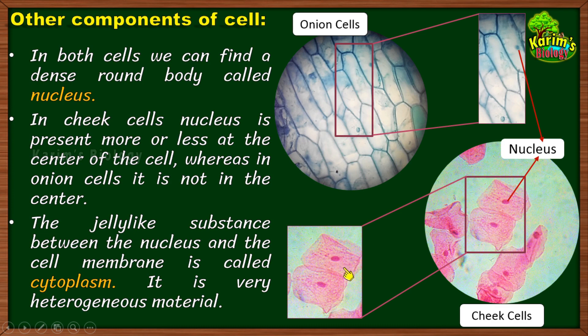Cytoplasm is called a heterogeneous material because within it there are so many substances dissolved — proteins, cell organelles called cell organelles, macromolecules, and carbohydrates. The cytoplasm is not pure; it has different substances in it, that's why it is called a heterogeneous material. This is the cytoplasm in onion cells, and here is the cytoplasm in cheek cells. As we have already seen, there is a darkly stained body at the middle of each cell called the nucleus.